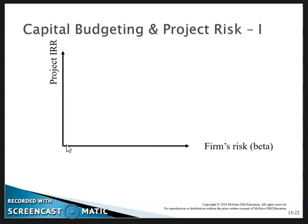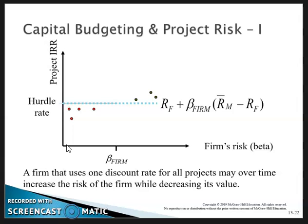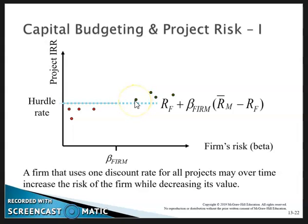Capital budgeting and project risk: a firm using one discount rate for all projects may over time increase the risk of the firm while decreasing asset value. We can see this by looking at low-return, low-beta projects on the left-hand side and higher-return, high-beta projects on the right-hand side, relative to the security market line.